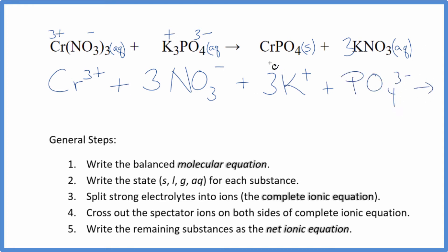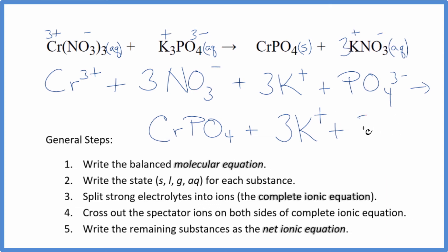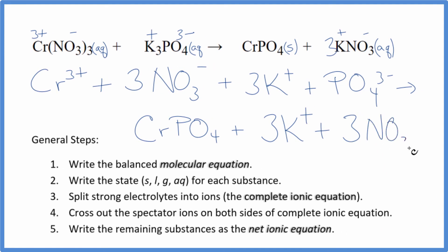And these are the reactants in our net ionic equation. For the products, in net ionic equations, we don't split solids apart. So we just have CrPO4. Again, potassium, that was positive. This nitrate ion, negative. So three potassium ions and three nitrate ions. So those are our products.